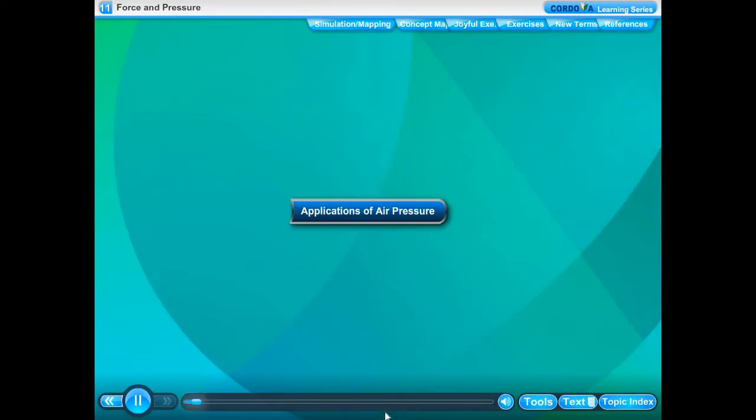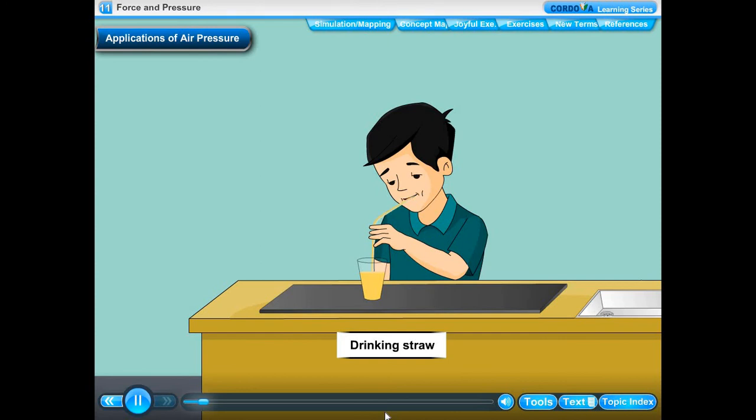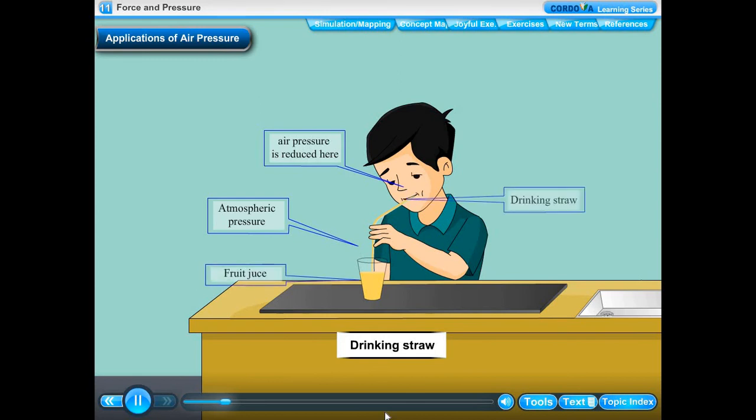Applications of air pressure. Drinking straw. We normally use a drinking straw to suck up fruit juice. When we suck air at the upper end of the straw with our mouth, the pressure of the air inside the straw is reduced. But the pressure acting on the surface of the fruit juice is equal to the atmospheric pressure. So, the greater atmospheric pressure acting on the surface of the fruit juice pushes the fruit juice up the straw into our mouth.